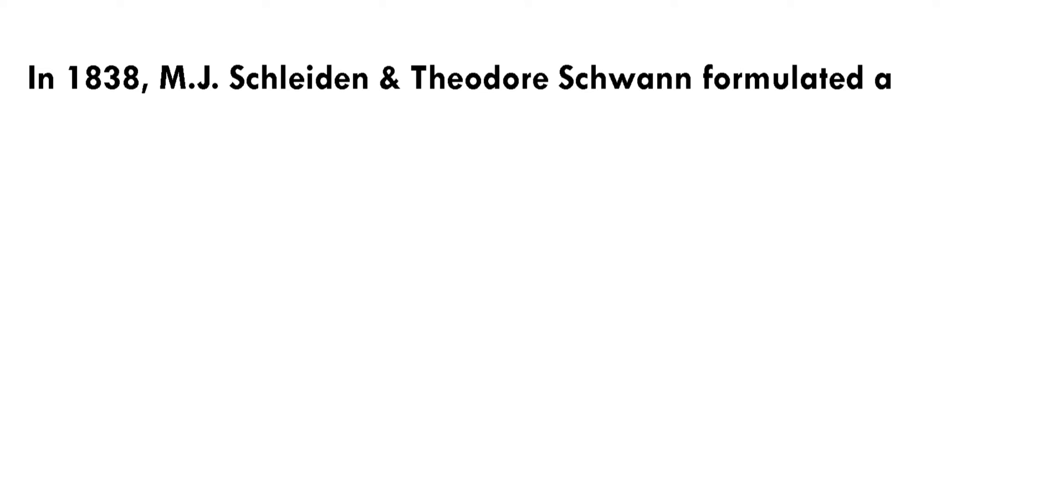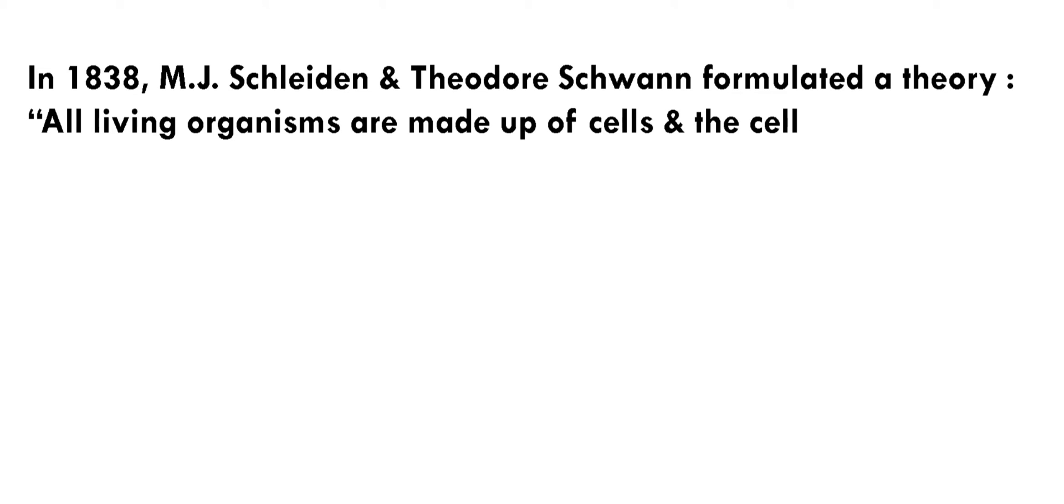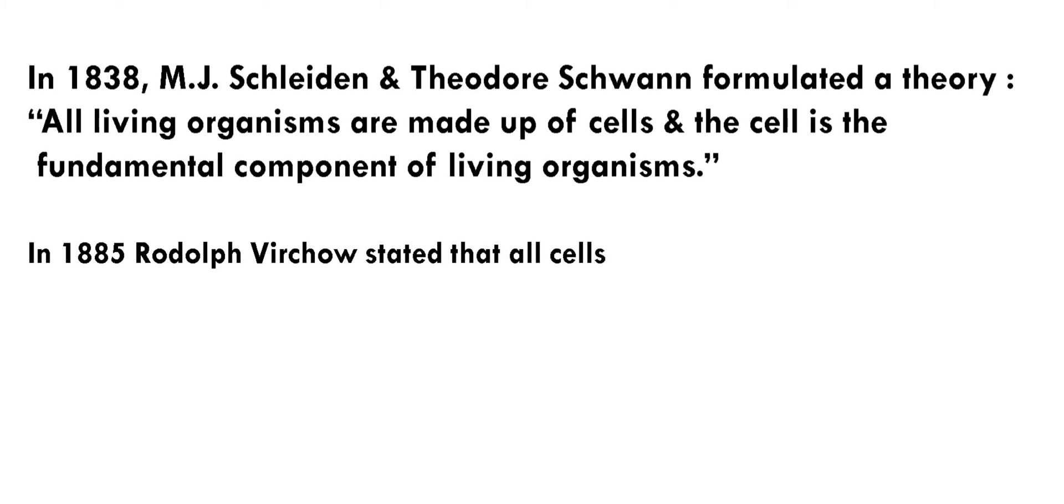In 1838, two scientists named M.J. Schleiden and Theodor Schwann formulated a theory which stated that all living organisms are made up of cells, and the cell is the fundamental component of living organisms. Further, in 1885, scientist Rudolf Virchow stated that all cells are formed from pre-existing cells.